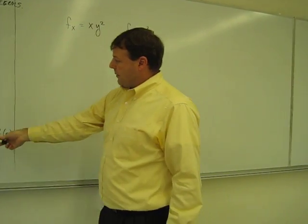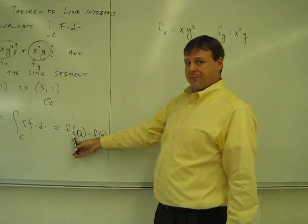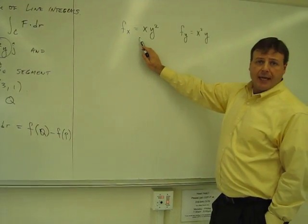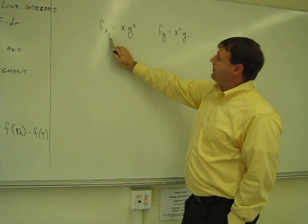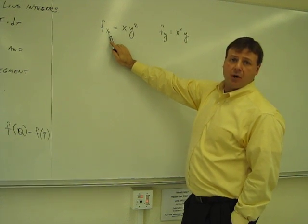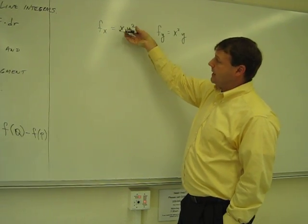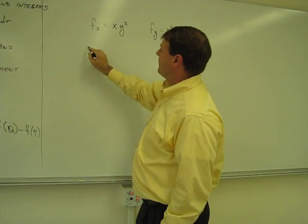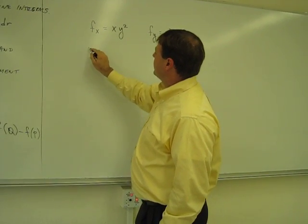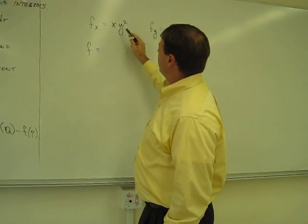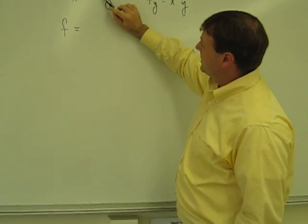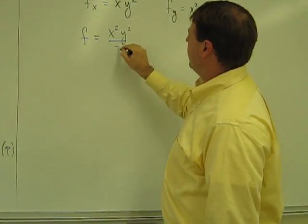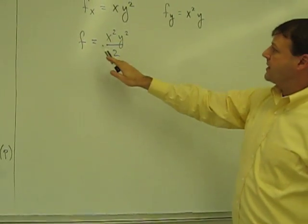My goal is to find out what this F is. What I'm going to do is make a first guess. If this came from taking the partial derivative with respect to X, then I can integrate with respect to X and get a good guess for F. When I integrate this with respect to X, I get X squared over 2, and I have to keep the Y squared. So that's my first guess at F.